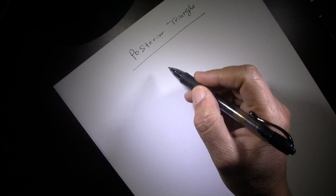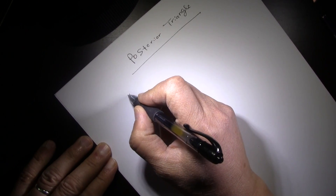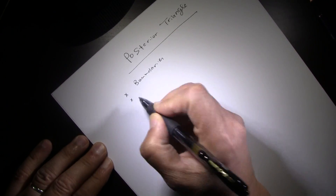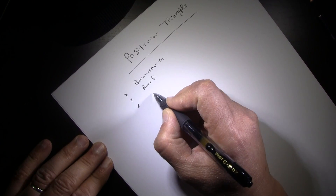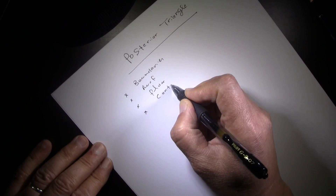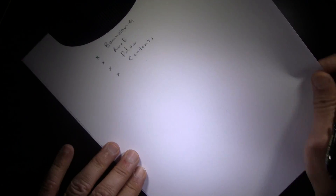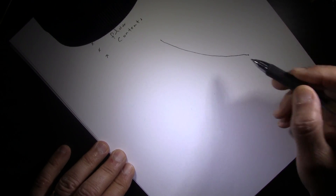Welcome to Easy Anatomy. Today I'm going to talk about the posterior triangle. For any anatomical space you need to cover the following items: first, boundaries; second, roof; third, floor; and finally, contents.